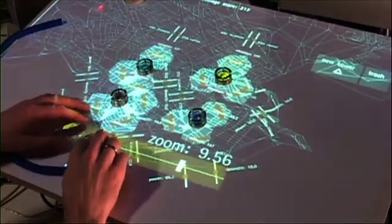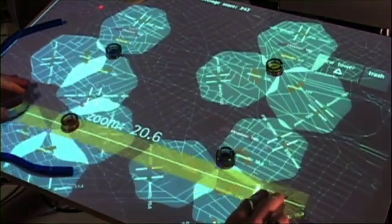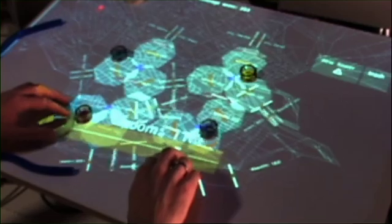The idea here is that each of the physical objects on the table represents a different cell phone tower. And we can move them around. The computer is also moving them around to try to optimize the cell phone coverage. And you can just sort of reach in and guide that process.